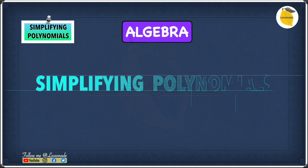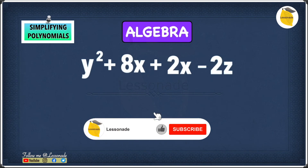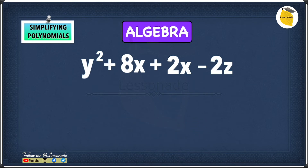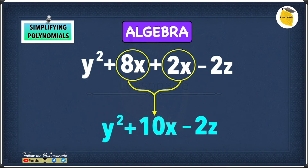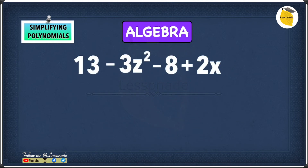Now let's look at simplifying actual polynomials. The first example is y squared plus 8x plus 2x minus 2z. In this example, we can find two like terms: 8x and 2x. Because they are like terms, we can combine them to get 10x. Therefore, the simplified polynomial is y squared plus 10x minus 2z.